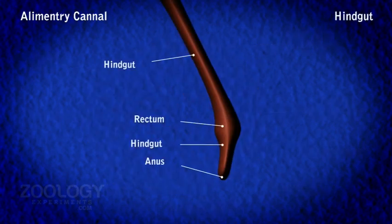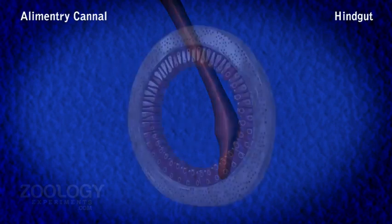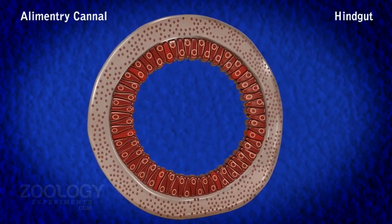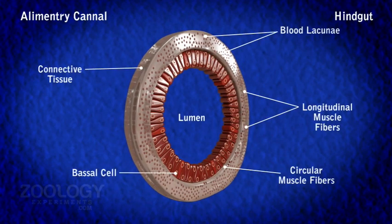Hindgut. It is the shortest portion of the elementary canal, leading from the midgut to the anus. Its anterior swollen muscular part, called the intestinal bulb or rectum, bears many internal longitudinal folds. The terminal narrow tubular part opens to the exterior through the anus, which is a sphinctered mid-ventral longitudinal slit-like opening situated on the raised papilla at the base of the telson.